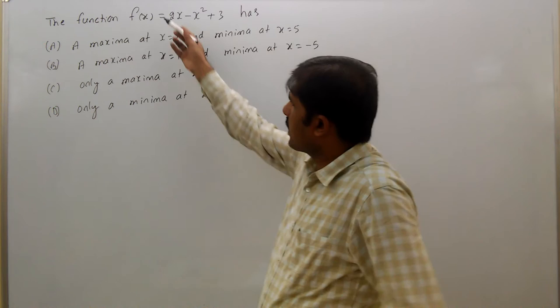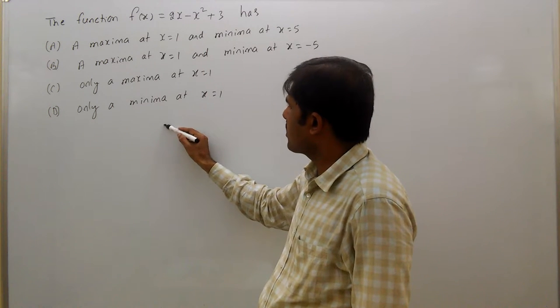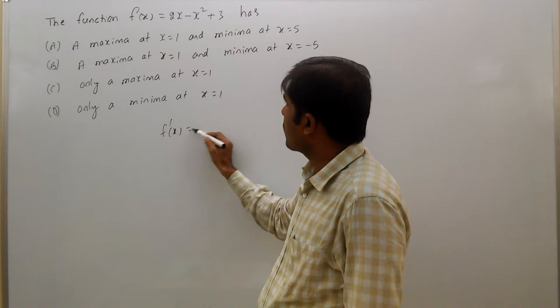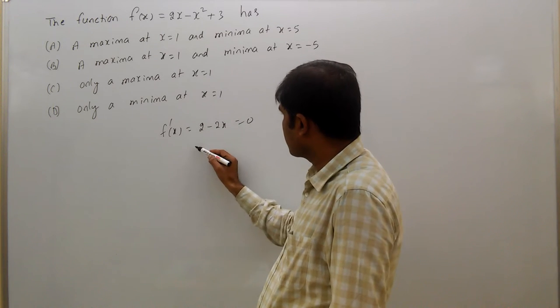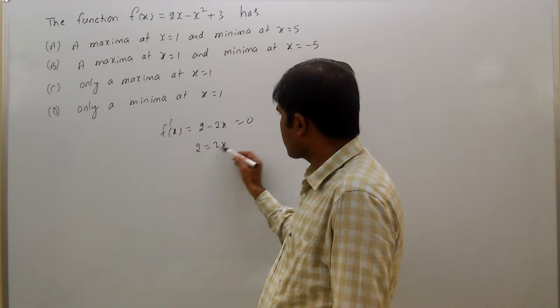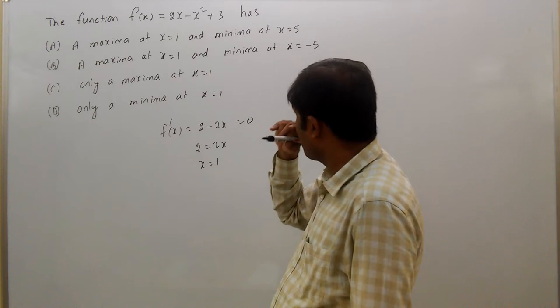Now, first we will find critical points, that is extremum points. f'(x) = 2 - 2x = 0, that means 2 = 2x, x = 1.